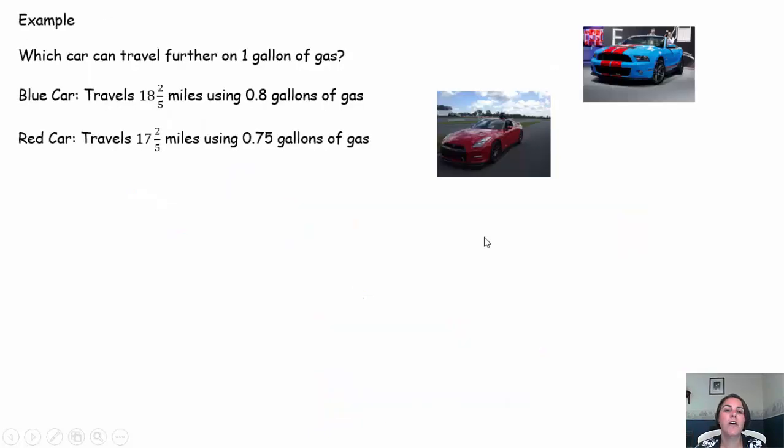Which car can travel further on one gallon of gas? The blue car travels 18 and 2/5 miles on 0.8 gallons of gas and the red car travels 17 and 2/5 miles on 0.75 gallons of gas. Pause the video. Try it out. Come on back.